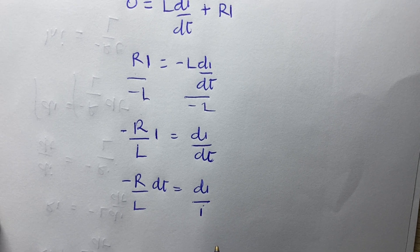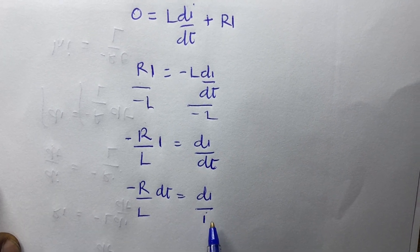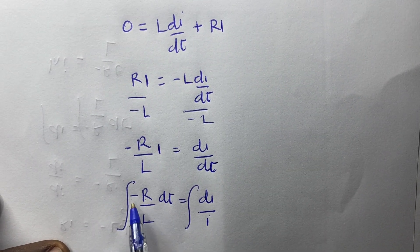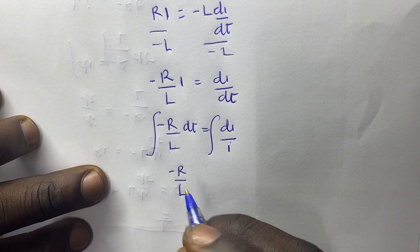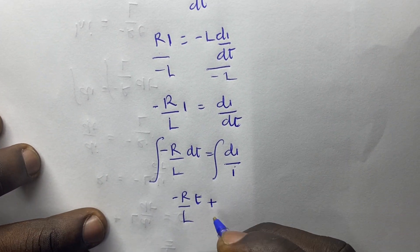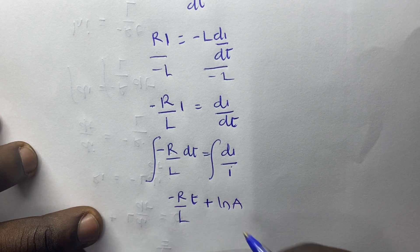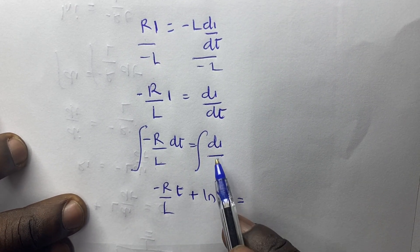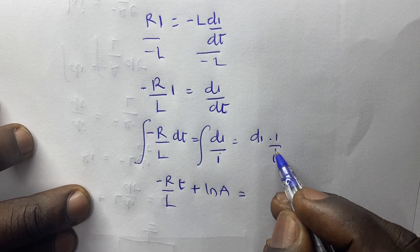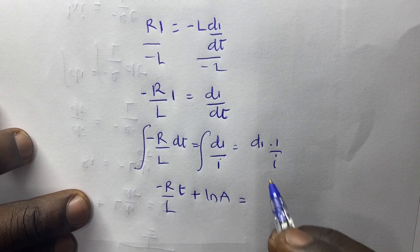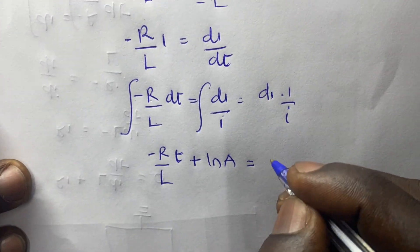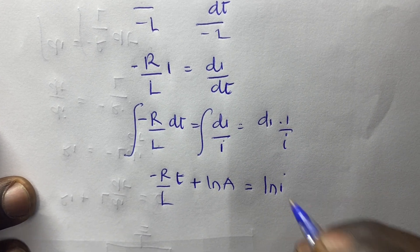So when we have something like this, now we can integrate both sides to find our i. So we can add our integration sign on both sides. And when we are considering, we know that R and L are constants, so we can bring them outside to get negative R/L. An integral of dt will simply give us t, and don't forget to bring your constant. Which is equal to the integral of di times 1/i. And when we integrate 1/i, it simply gives us ln of i, because the differentiation of ln(i) gives you 1/i. So we are going to get ln of i.